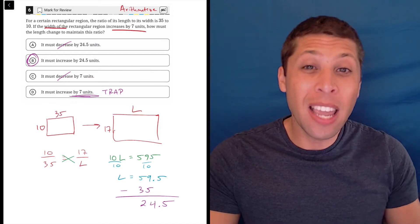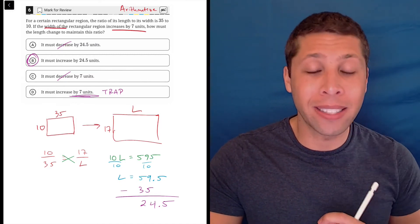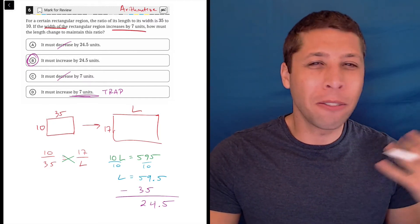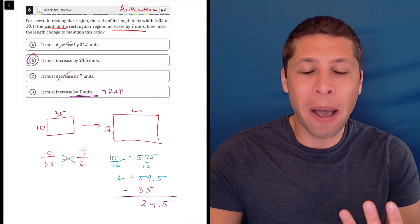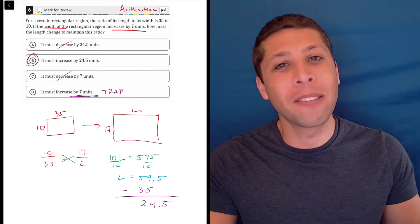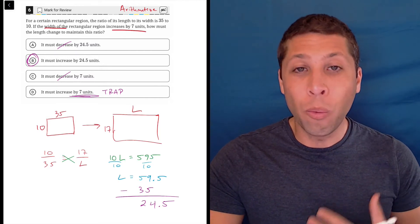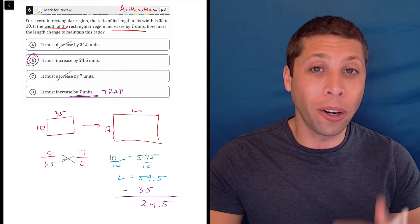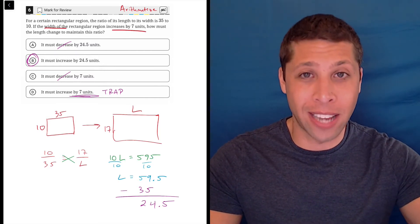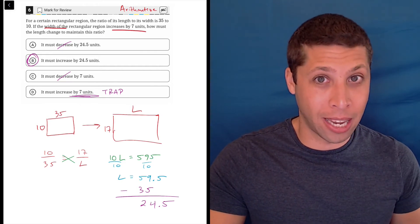This is the choice that someone picks if they don't understand the math. The question says it increases by seven. Your confused instincts about math tell you an increase of seven for the width means an increase of seven for the length. But it's not going to be that easy. We should at this point know we're in the hard section of the test. This is the hard second module, and so it's got to be more complicated.